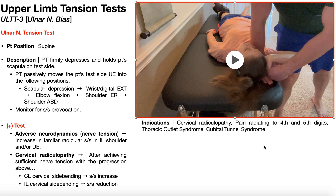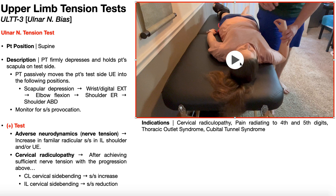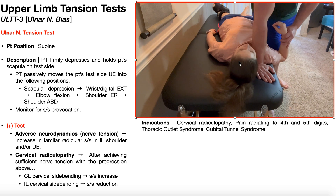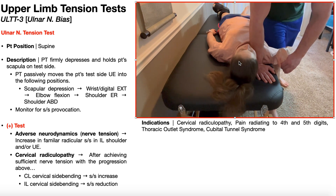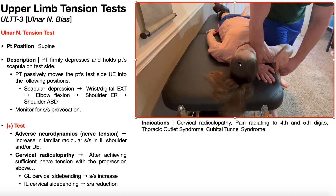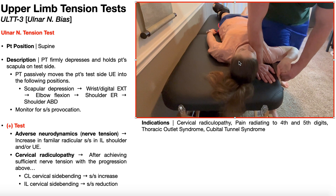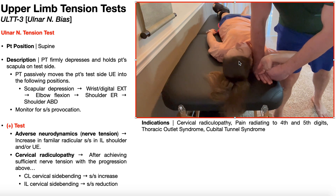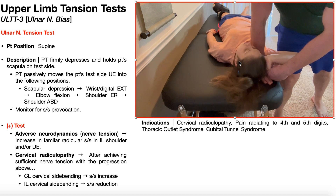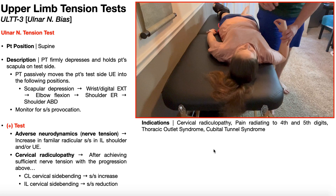Let's look at the ulnar nerve tension test one more time in real time. First, depress the scapula. Then tell the patient to make an OK sign and extend digits 3, 4, and 5 along with the wrist. Make sure the elbow remains flexed, give some shoulder external rotation, then abduct the shoulder while blocking the scapula — try to get the hole formed by digits 1 and 2 toward her ear. Then use side bending away from or toward the affected side to rule up cervical radiculopathy, depending on whether symptoms increase or reduce respectively.